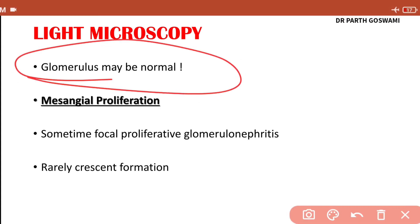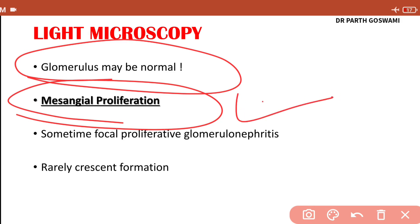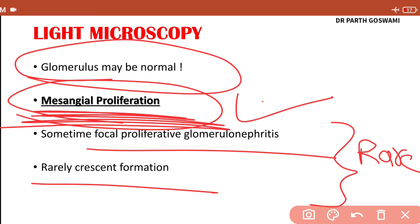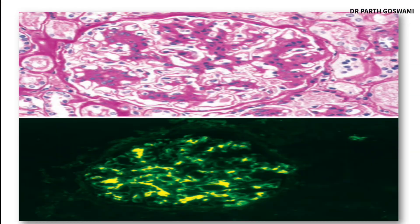Regarding light microscopic appearance of IgA nephropathy, the glomerulus is essentially normal except for mesangial proliferation, which is the main finding. Very rarely, the patient can have focal proliferative glomerulonephritis resembling post-infectious glomerulonephritis, or there could be crescent formation, but these two events are very rare. In this diagram, you can see mesangial deposits of IgA1.